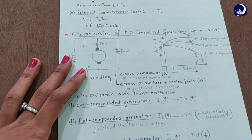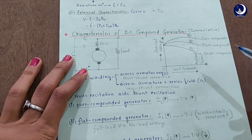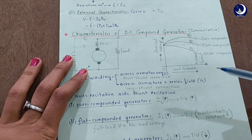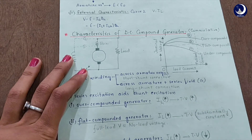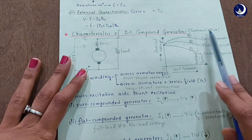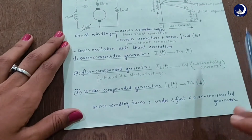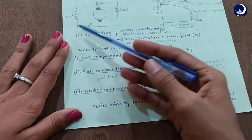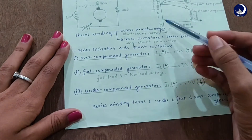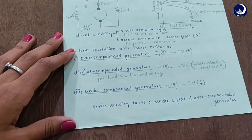The compound generator can be either cumulatively compounded or differentially compounded. The differentially compounded generator is rarely used in practice, so we will study the cumulative one. This is the characteristic curve graph for the DC cumulatively compounded generator, where the series excitation aids the shunt excitation. Compounding can be done at different degrees or levels, which we will discuss now.